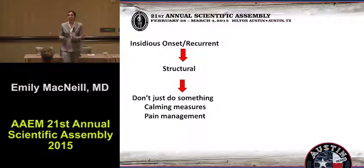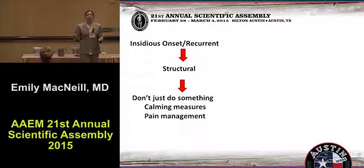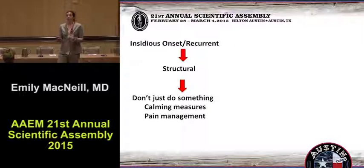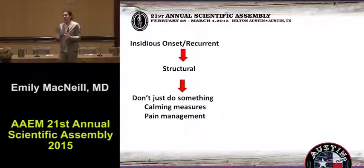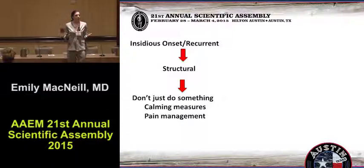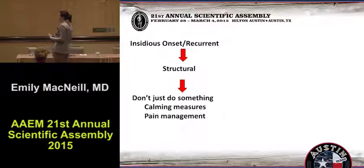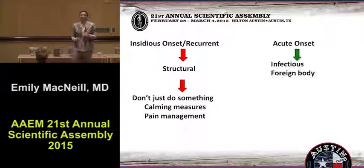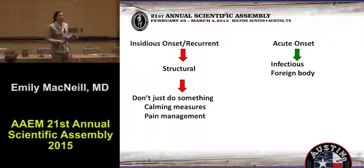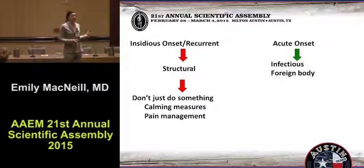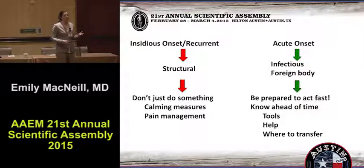Maybe they have subglottic stenosis and they have a tight little airway. Now they have a cold and it's worse. I'm going to show you some pictures of subglottic stenosis — you don't want to intubate that child at all. Nobody wants to intubate that child. So don't just do something. Stand there for a minute. Calm the child down. Give them steroids. Give them analgesics. Give them antipyretics. Keep them calm. If it's acute onset, on the other hand, and they've never had this before and all of a sudden they come in with noisy breathing, you want to think infection or foreign body — and now you better be prepared to act fast.